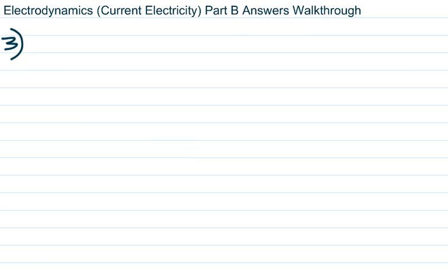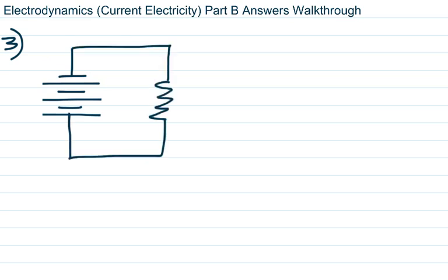Number three talks about a parallel circuit and wants us to draw a diagram using the symbols on page four of the reference table. The problem describes two resistors, a source of potential difference (voltage), and an ammeter to read total current. I start with my source of potential difference — make sure you have the same number of long lines as short lines — and this is a parallel circuit, so I include two resistors.